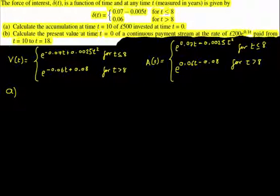Calculate the accumulation at time t equals 10 of £500 invested at time t equals 0. So we started at time t equals 0, we put in £500, left it in there for 10 t's, and let's see, we'll find out what it's worth. So we're going to need to use this accumulation factor over here.